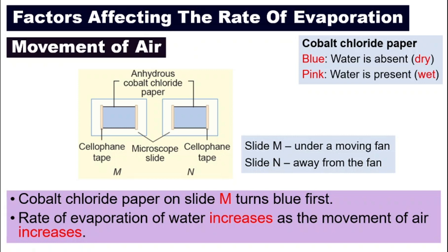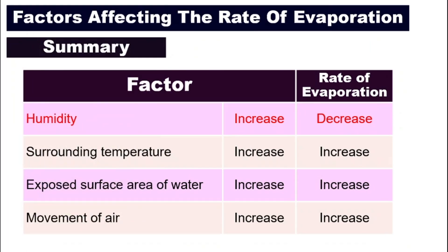We have looked at four different factors that affect the rate of evaporation. Here is a summary. We have four different factors: humidity, surrounding temperature, exposed surface area of water, and movement of air. You will find that only humidity is the opposite — when humidity increases, the rate of evaporation will decrease. For the rest of the other three factors, they are the same: if the factor increases, the rate also increases. Humidity is the only one that is the opposite.